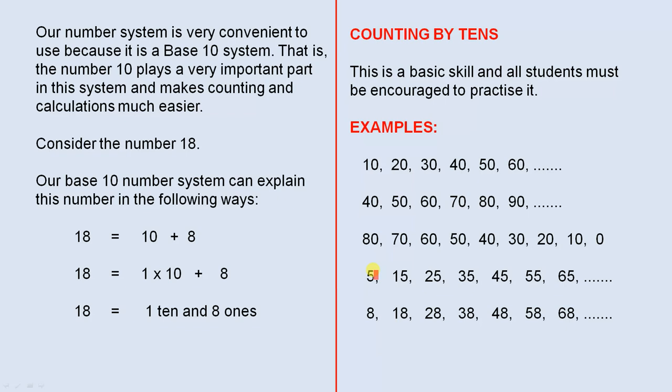You can start at any particular number and just keep adding 10. So there are two examples here. We start at 5 and keep adding 10, or we can start at 8 and keep adding 10. And you can see how easy it is because if we start at 5, the last digit is 5 in each case. That's why it's such a beautiful system.